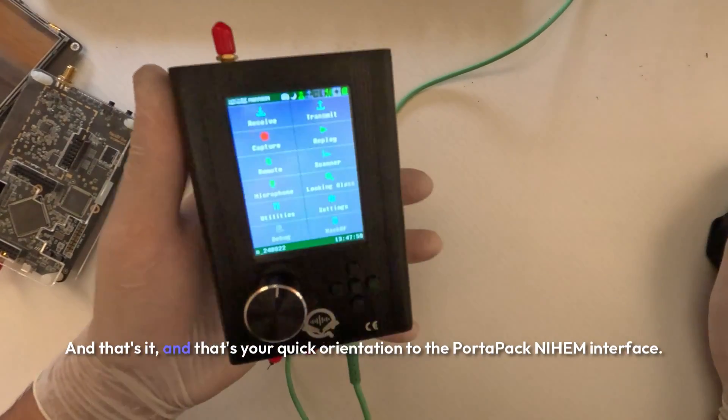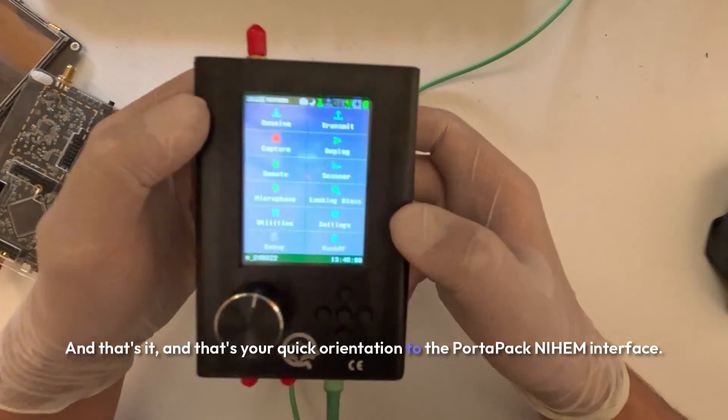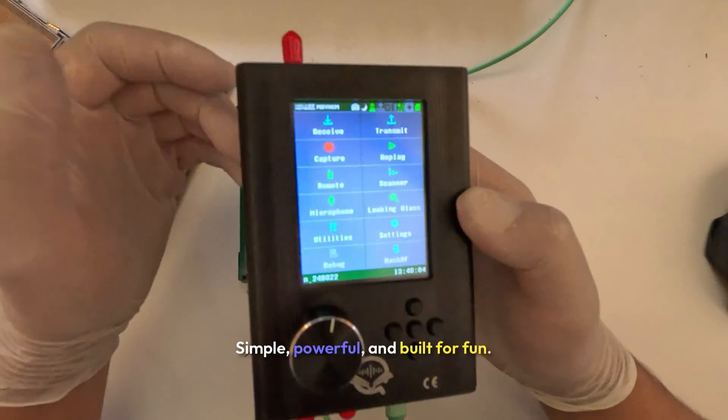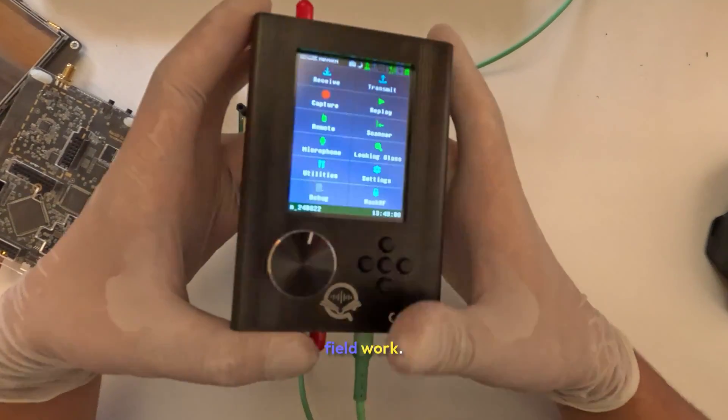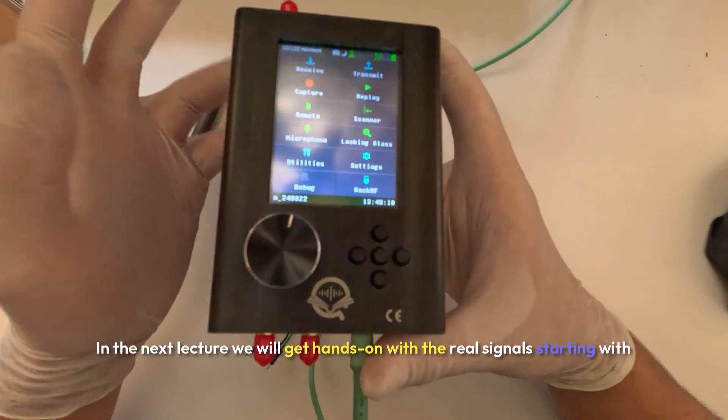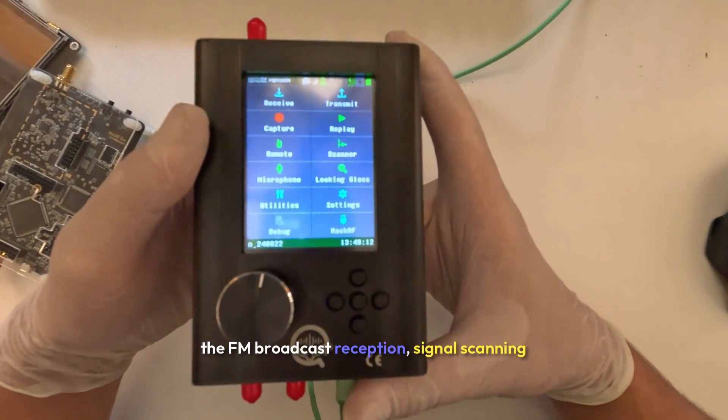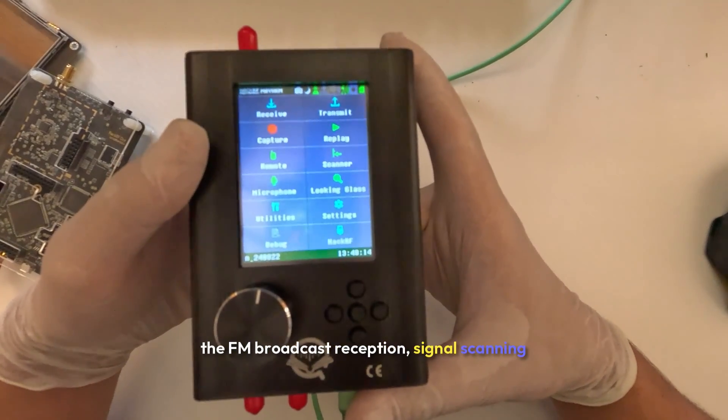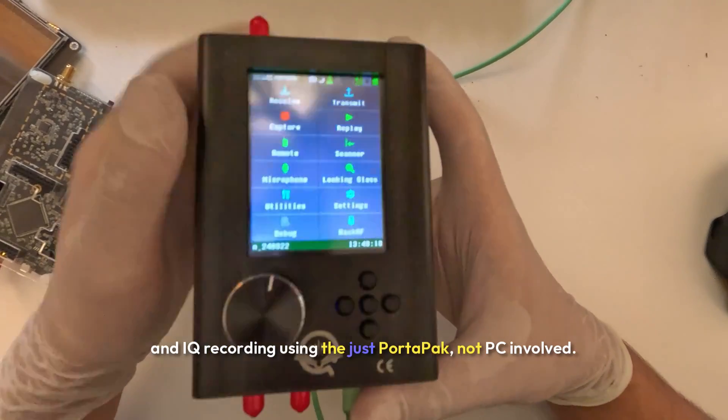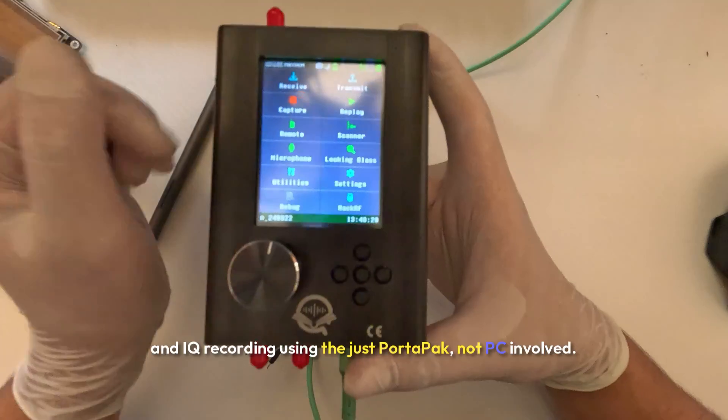And that's it. That's your quick orientation to the Portapack Mayhem interface. Simple, powerful and built for fieldwork. In the next lecture we will get hands on with real signals starting with FM broadcast reception, signal scanning and IQ recording using just the Portapack, no PC involved.